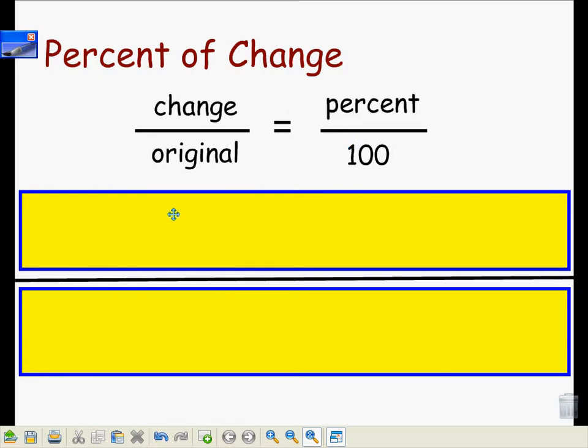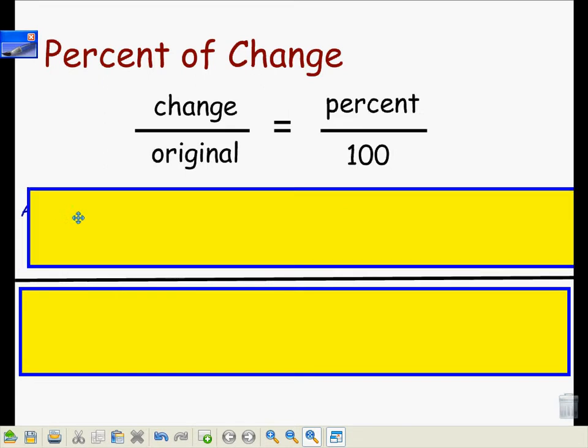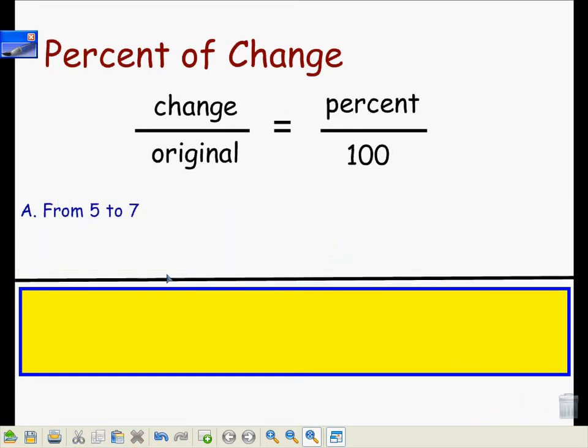So let's take a look at an example using this formula. If we were to calculate the percent of change moving from 5 to 7, the first thing we need to do is realize that going from 5 to 7 is a change of 2.